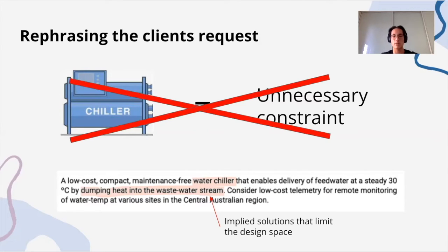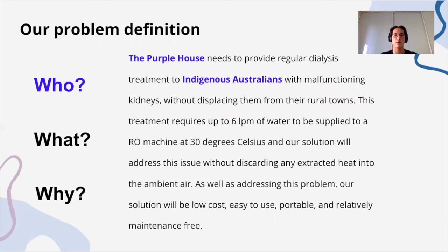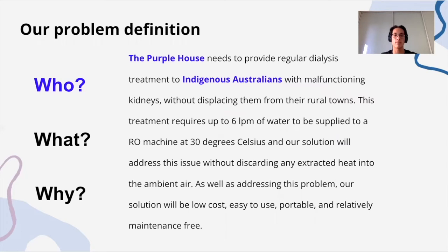Rather, they desire that extracted heat not be dumped into the ambient air, meaning heat doesn't necessarily have to be dumped into the wastewater stream. By clarifying the customer's requirements, our problem statement doesn't include these two unnecessary restrictions that would have otherwise limited the range of ideas we explored in the conceptual design phase. Our statement uses the who, what, why structure outlined by Michael Schofield, and we identify the Purple House and Indigenous Australians as being those who are dealing with the problem. We conveyed what this problem is: regular dialysis treatment must be provided without displacing Indigenous Australians from their rural towns, and that this treatment requires up to 6 litres per minute of water supplied to an RO machine at 30 degrees Celsius, without extracted heat being discarded into the ambient air. As a group, we identified that processing up to 6 litres per minute of water and not dumping heat into the air were imperative constraints.